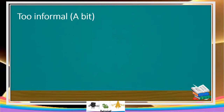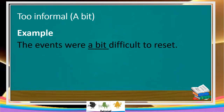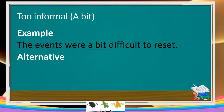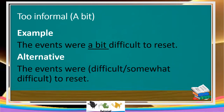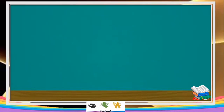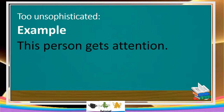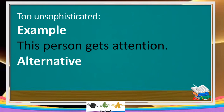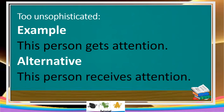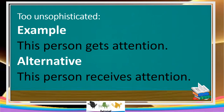Why do we need to avoid those three? Too formal — look at this example: 'The events were a bit difficult to reset.' The word used is 'a bit.' A better alternative is: 'The events were difficult' or 'somewhat difficult to reset.' This is more understandable than using 'a bit.' For too unsophisticated — example: 'The person gets attention.' Alternative: 'This person receives attention.' The second example is better than the first.